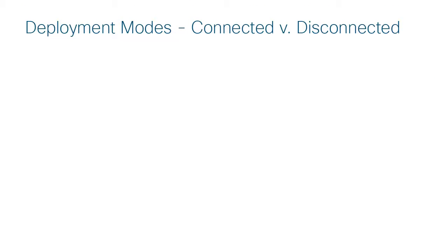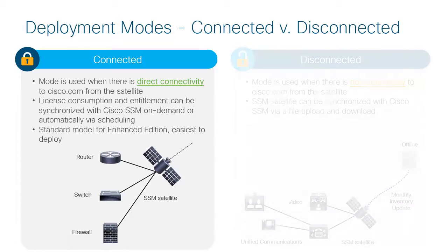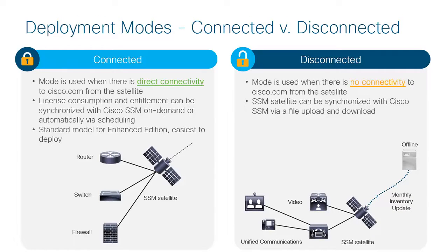SSM Satellites can be deployed in two modes: connected or disconnected. The connected mode is used when there is connectivity to Cisco.com directly from the satellite. License consumption entitlement can be synchronized with Cisco SSM on demand, or automatically through daily, weekly, or monthly scheduling. The connected mode is the standard mode for Enhanced Edition and the easiest to deploy. The disconnected mode is used when there is no connectivity to Cisco.com from the satellite, and the satellite can be manually synchronized with Cisco SSM via a file upload and download.